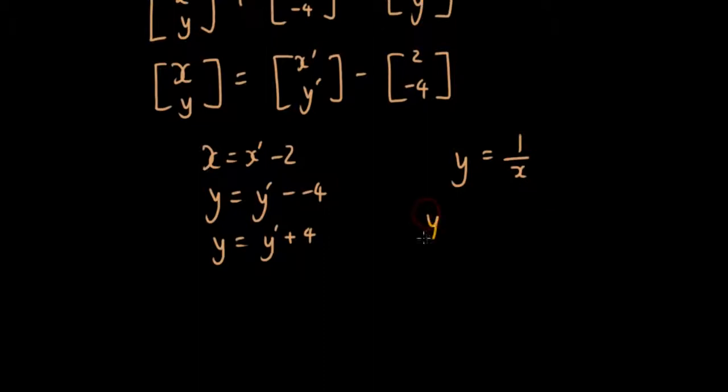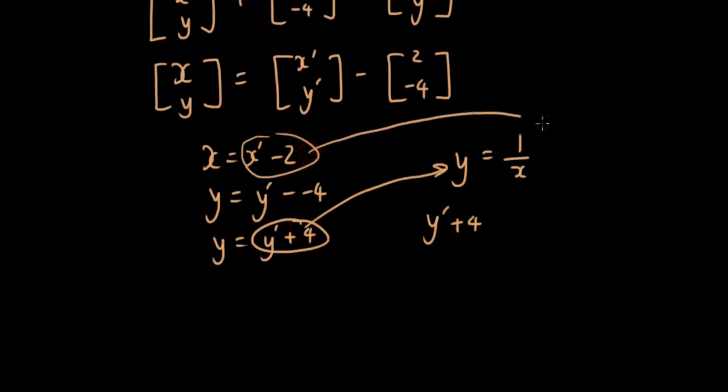I then have y' plus 4. I'm substituting this into y and I'm substituting this into x. So y' plus 4 equals 1 over x' minus 2. And I'm going to move the plus 4 to the other side. So it's 1 over x' minus 2 minus 4. And let's test it using GeoGebra to see whether I've got the right answer.